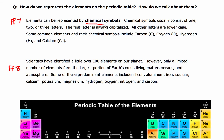Chemical symbols are a key concept here. Chemical symbols usually consist of one, two, or three letters. The first letter is always capitalized and all other letters are lowercase.